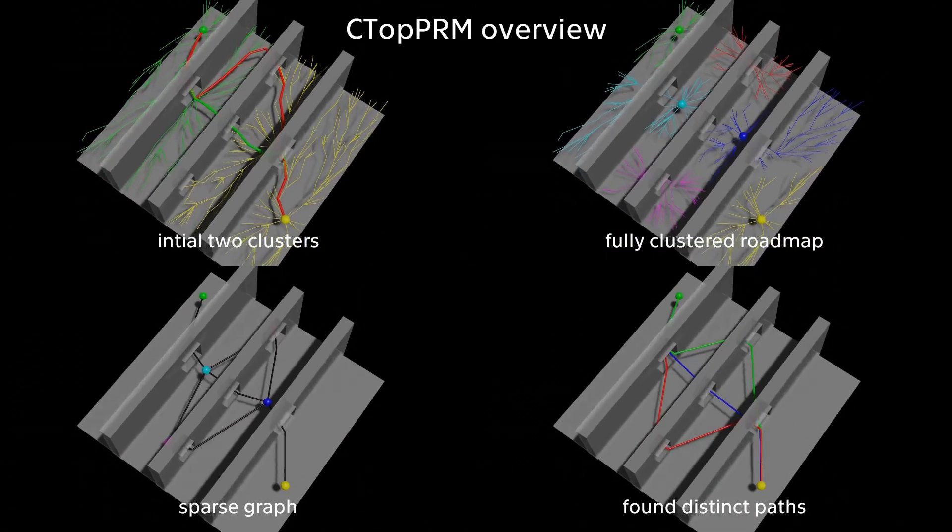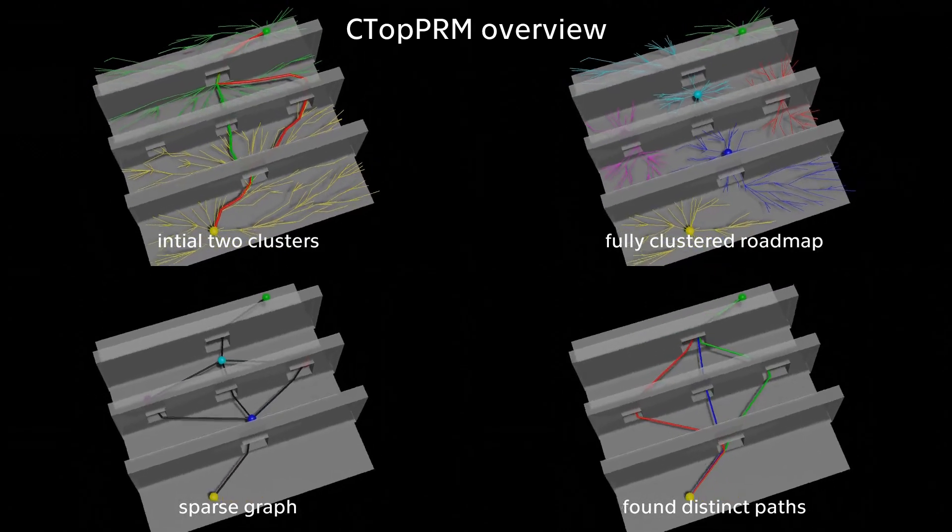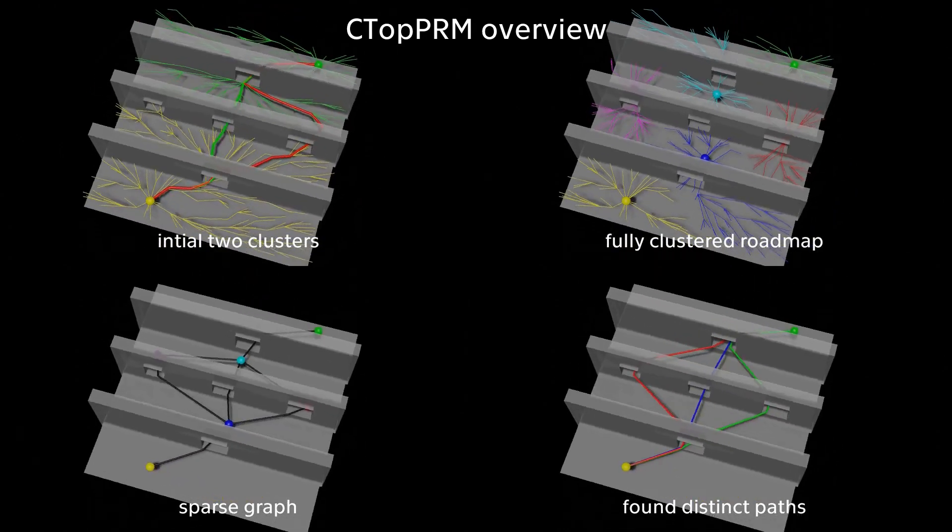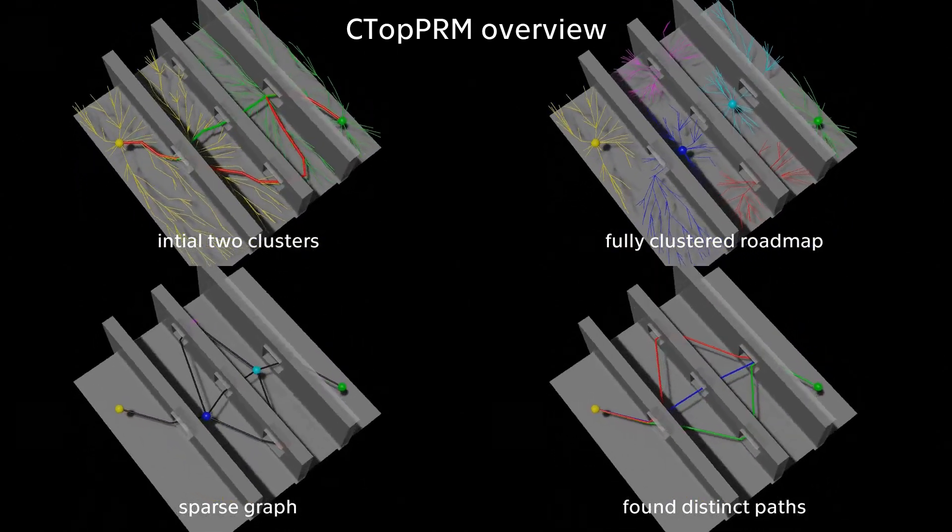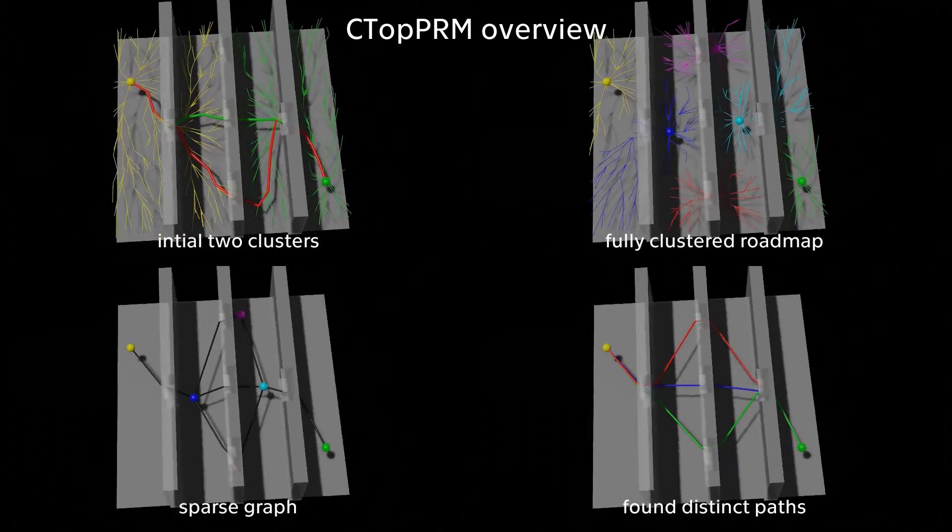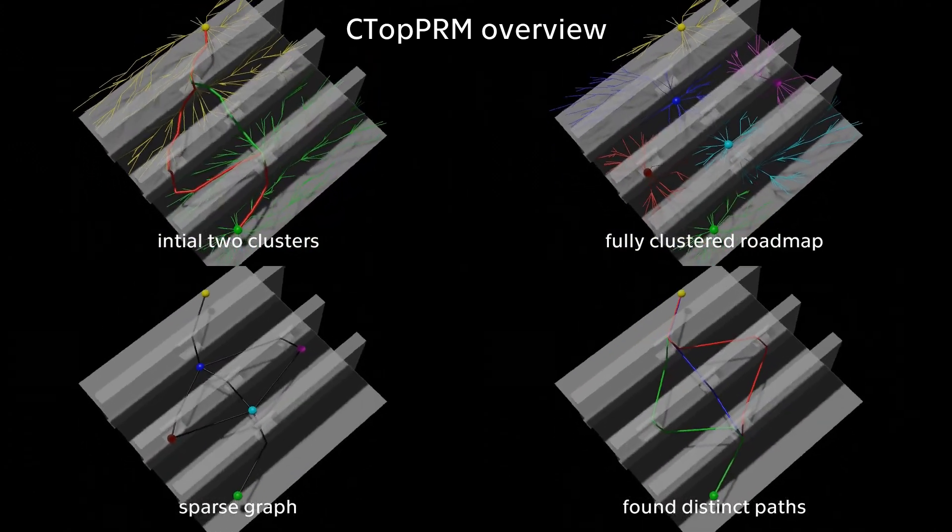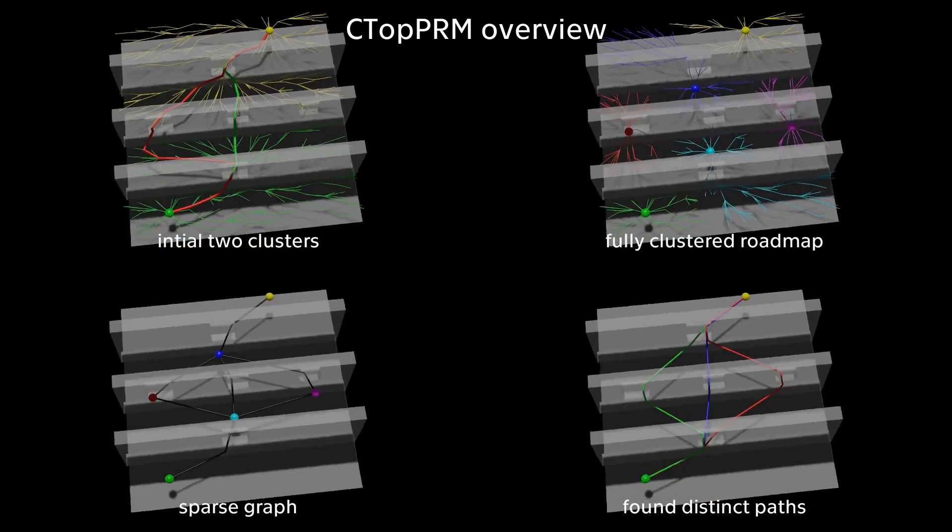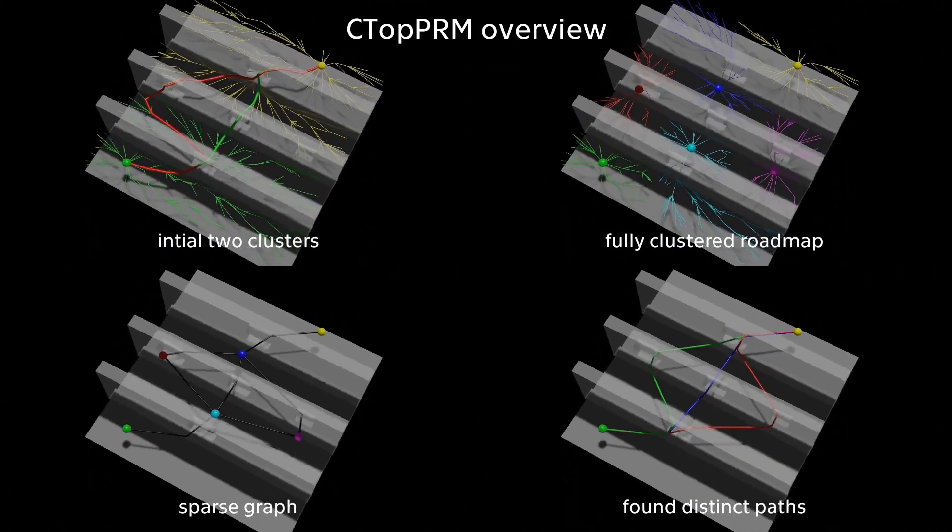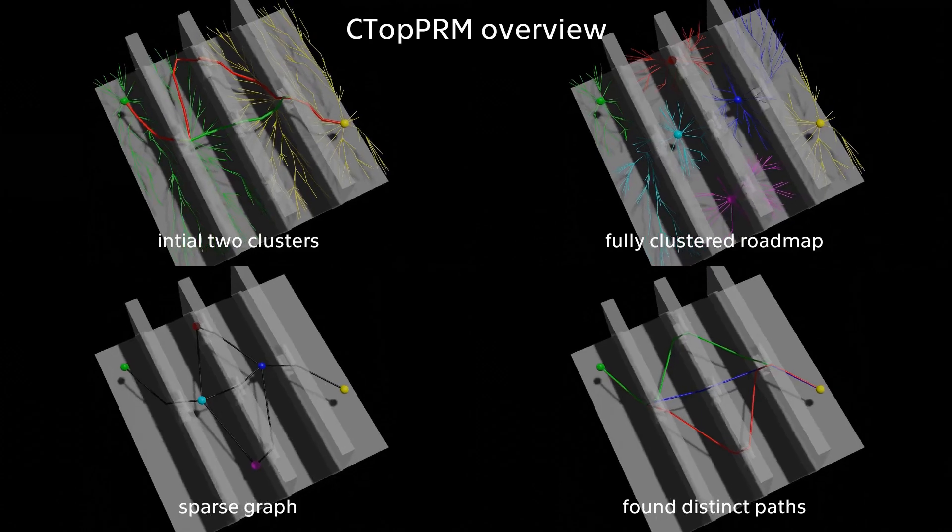Our method, CTOPPRM, constructs a sparse graph with greatly reduced number of nodes by clustering a dense roadmap. This graph allows fast path searching while capturing all homotopy classes that the initial dense roadmap had captured.